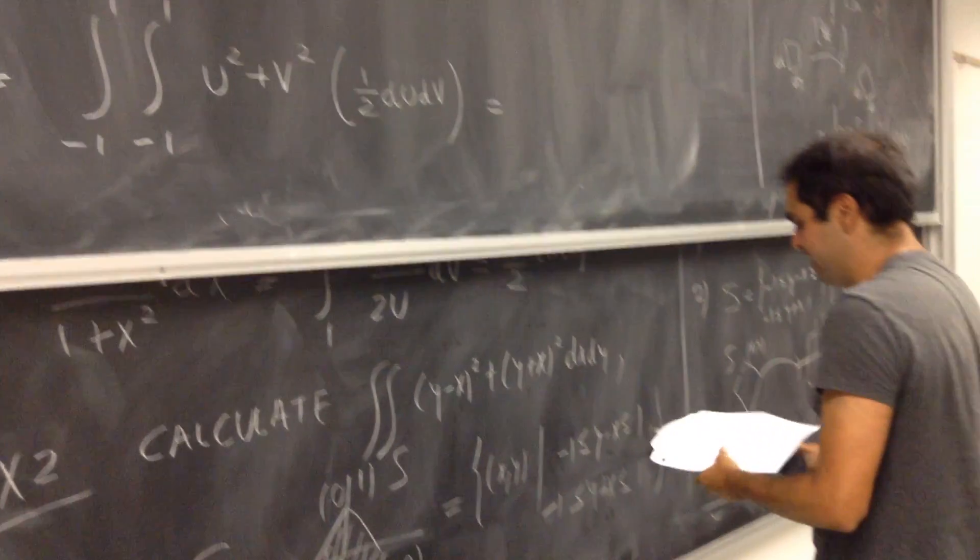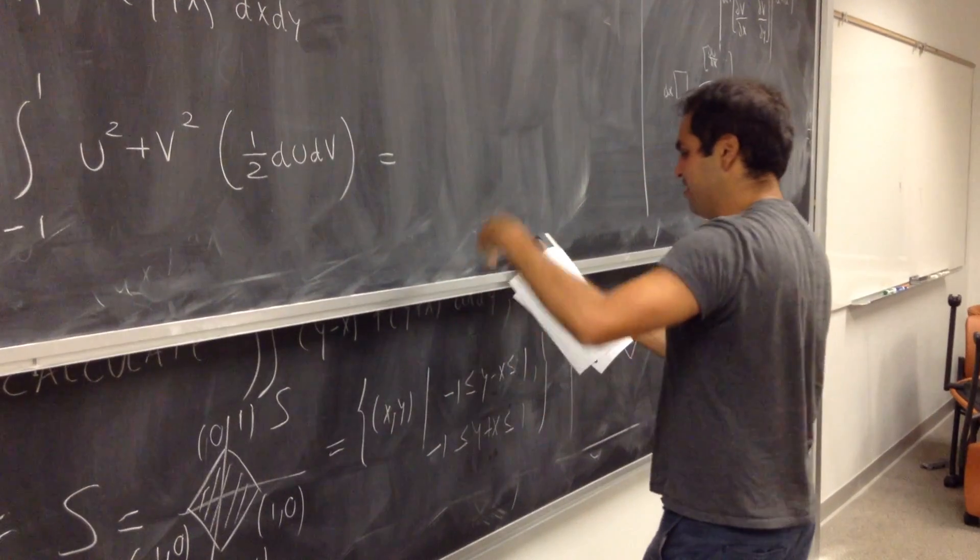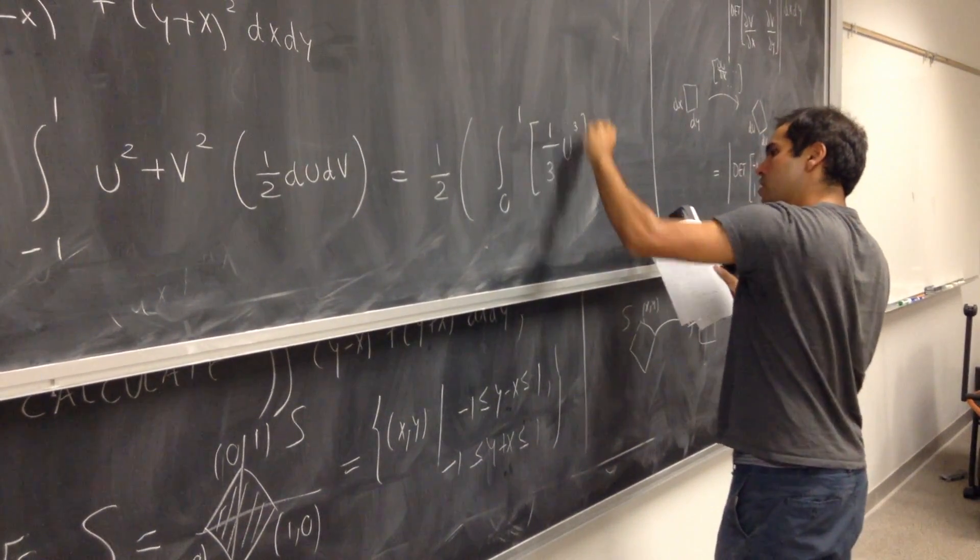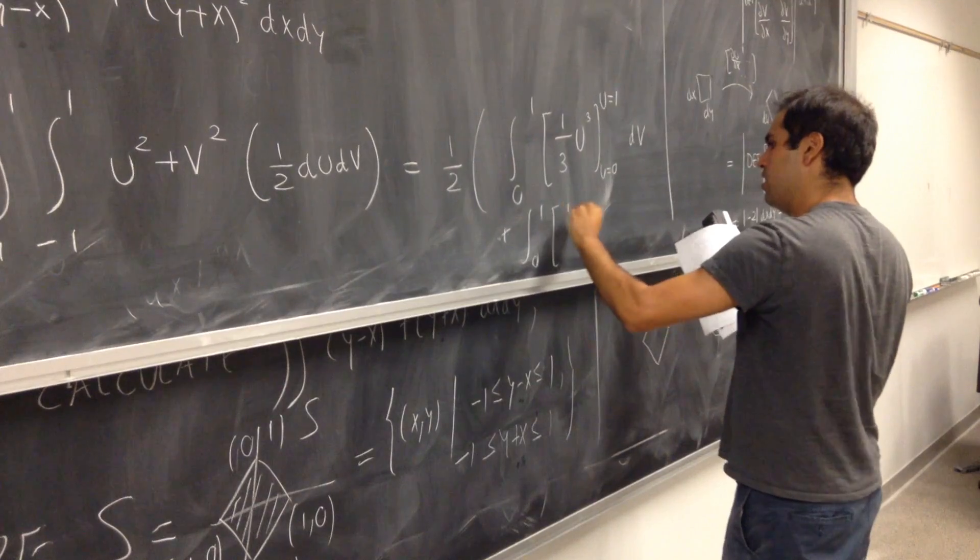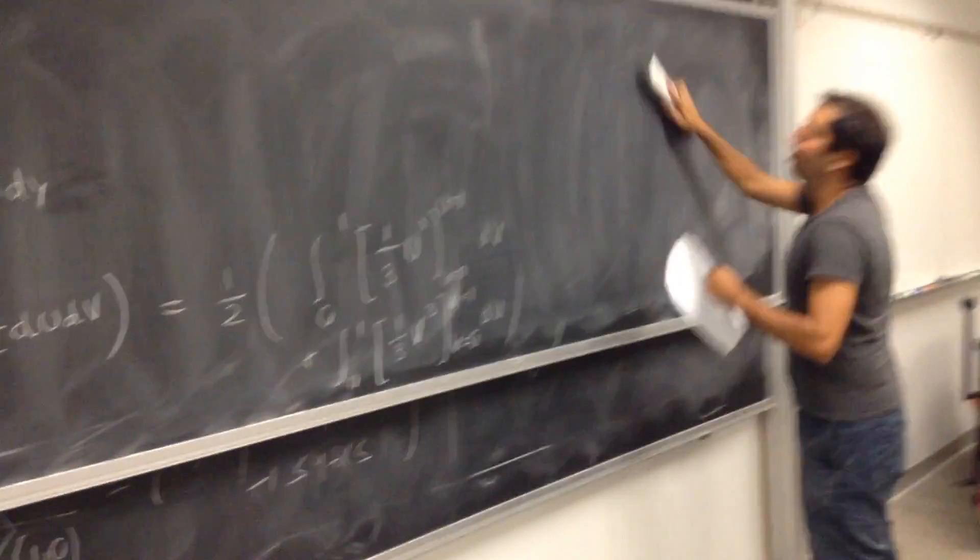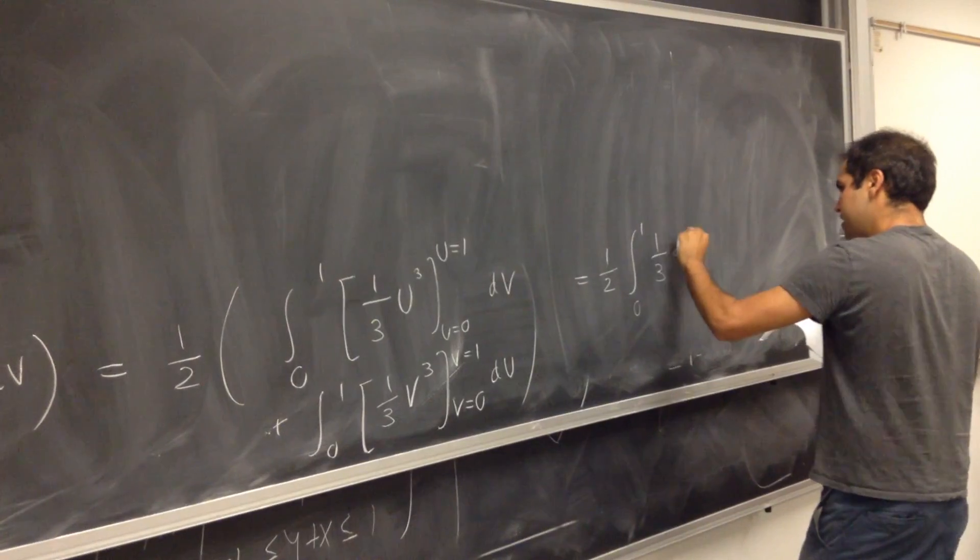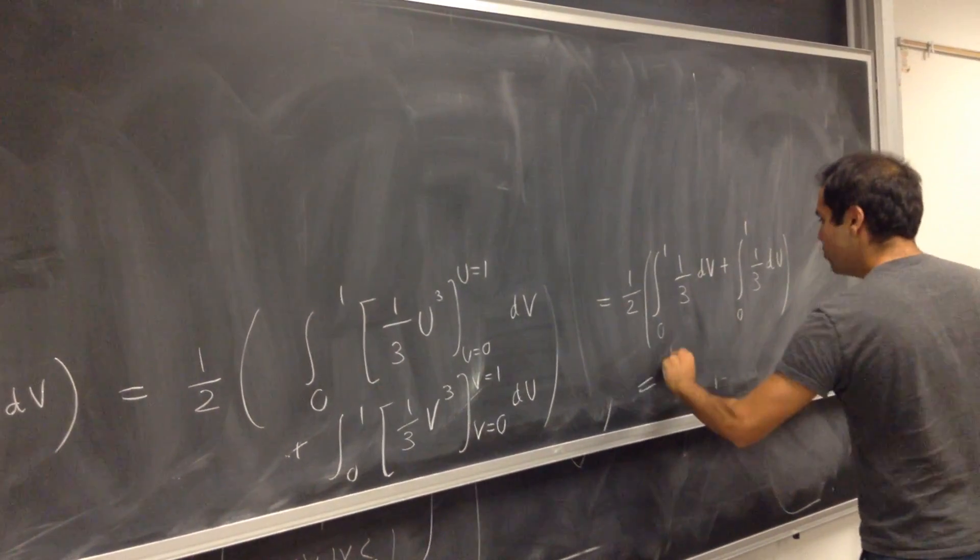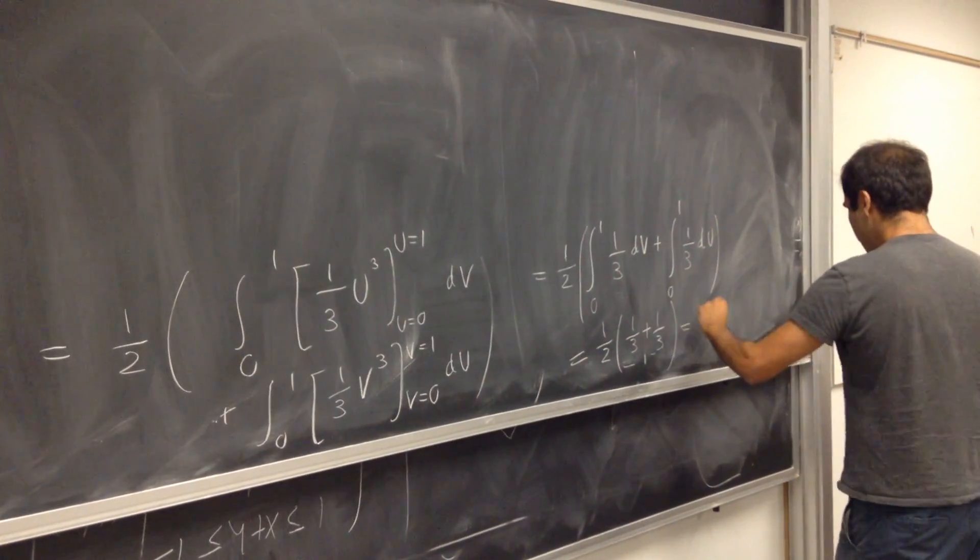And then, you can actually calculate this. So, not too bad, because those are two separate kind of integrals. So, this is 1 half, integral from 0 to 1, 1 third u cubed from 0 to 1, dv, plus integral from 0 to 1, 1 half v cubed from v equals to 0 to v equals to 1 du. So, in here, obviously, some examples are more complicated than that. But, you get 1 half, integral from 0 to 1, 1 third dv equals integral from 0 to 1, 1 third du, which becomes 1 half times 1 third plus 1 third. Okay, so 1 half times 2 thirds, which becomes 1 third in the end.